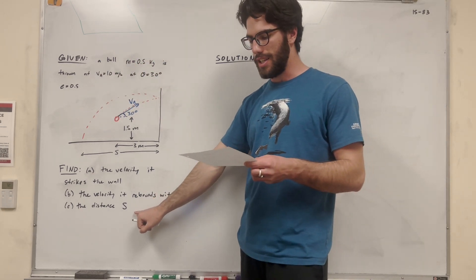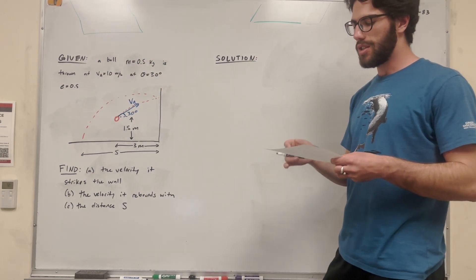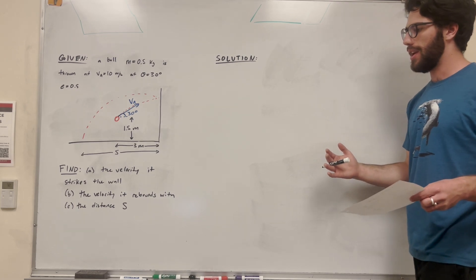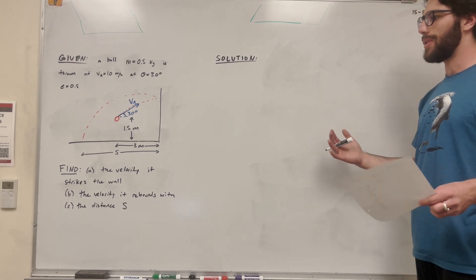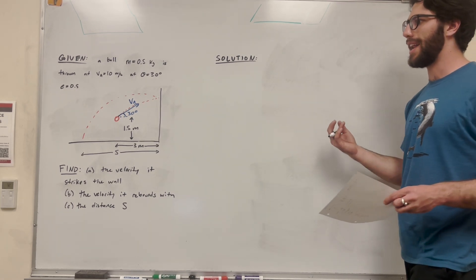Then finally, we're finding the distance S at which it travels. So we can go ahead and start with this. Let's start with Part A — just a simple kinematics problem.